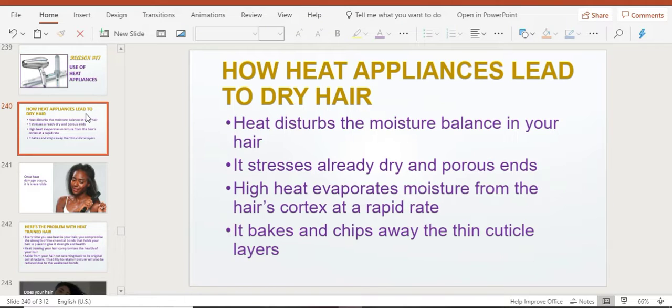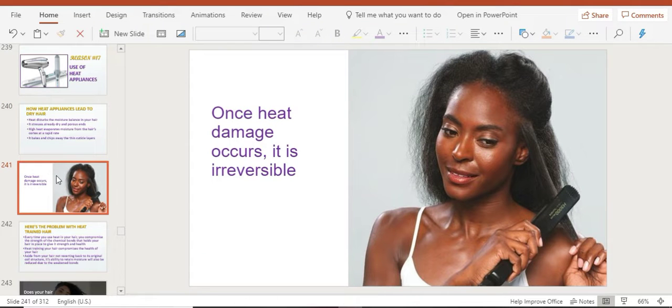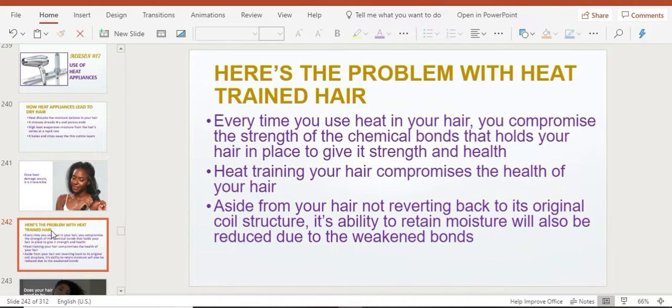Just keep that in mind whenever you use harsh heat on your hair. Once heat damage occurs, it is irreversible. That's why it's always recommended to trim your hair. There's nothing you can do about heat damage because you've already destroyed those cuticles.